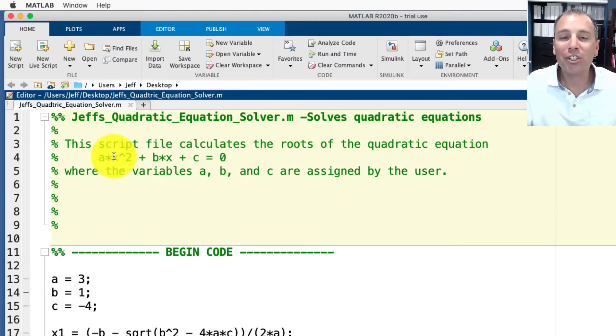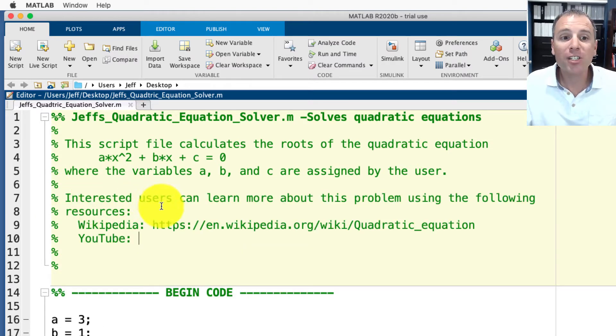After we've answered the question what problem does this code solve we're gonna provide additional information where interested readers can learn more about this problem. So for example we might say interested users can learn more about this problem using the following resources. For example Wikipedia has a great page on quadratic equations. Perhaps as a content creator I have links to YouTube videos that I want to post there.